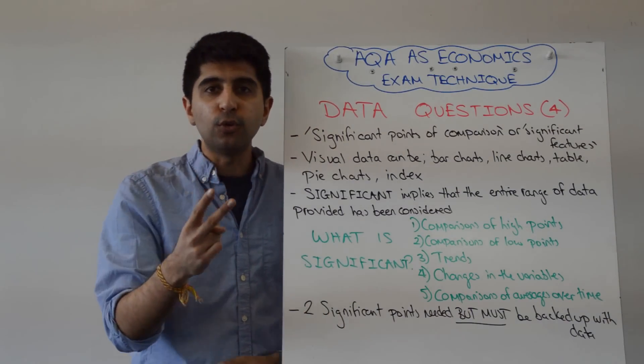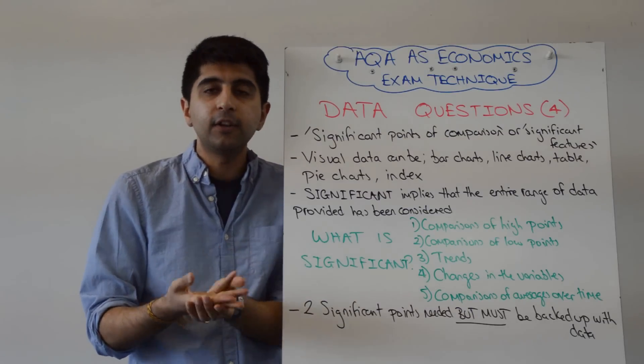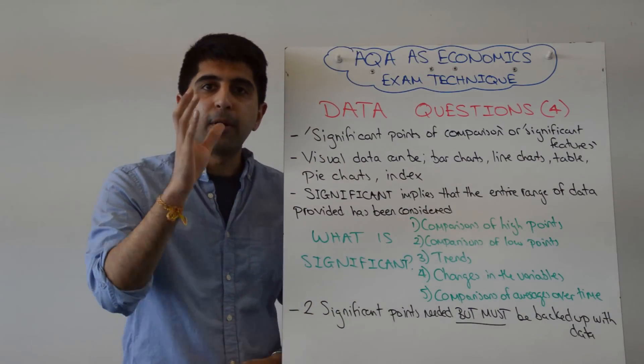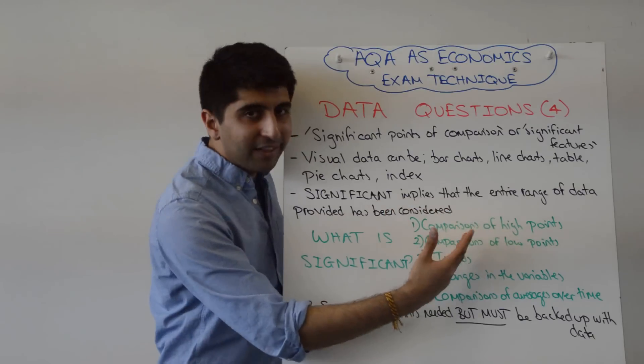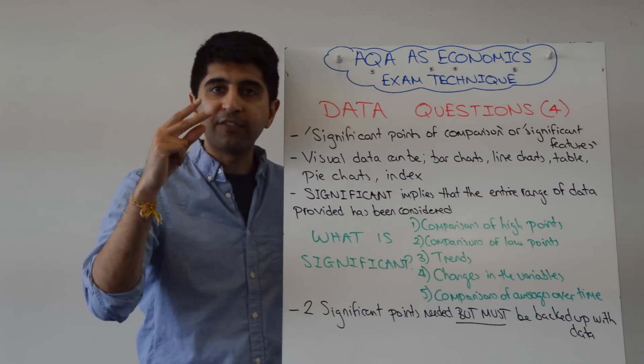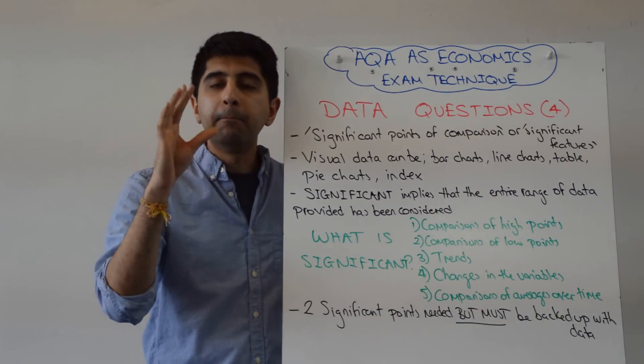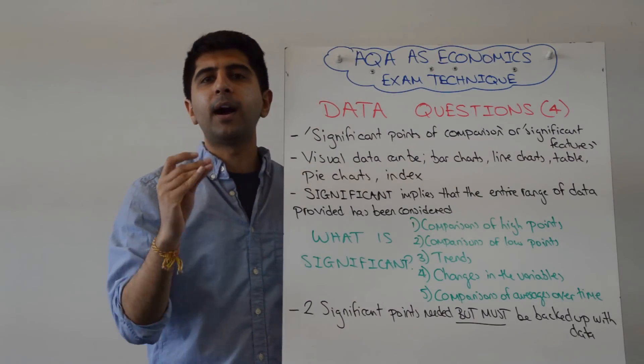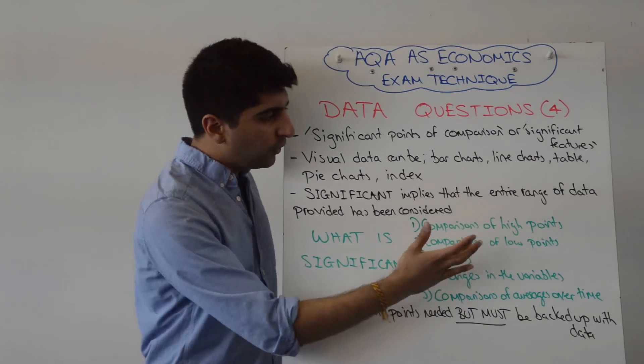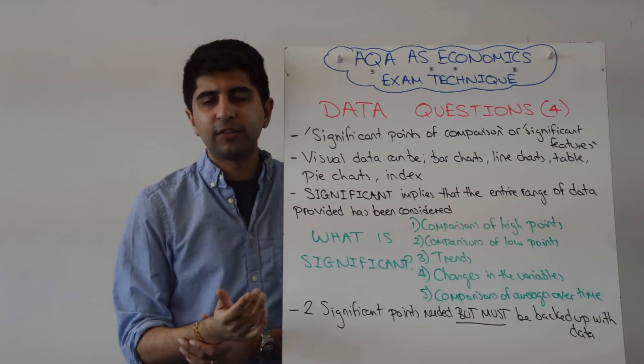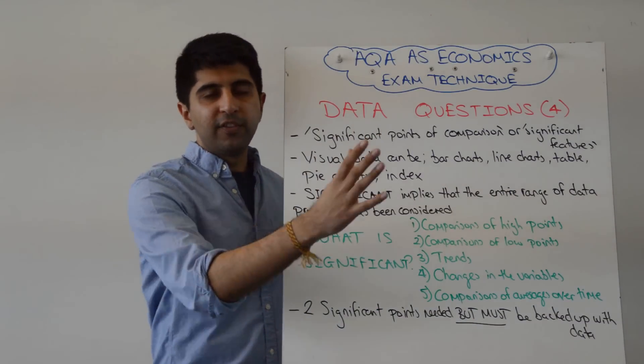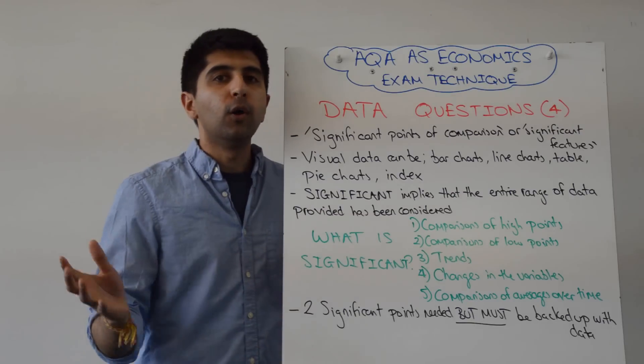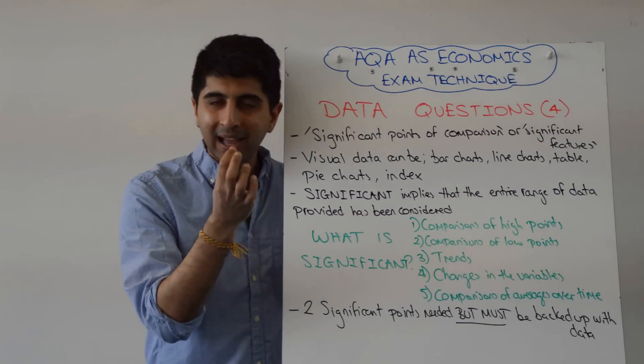But the key thing is once you've done that, you need to make two significant points of comparison or two significant features depending on how the question is worded. But remember, just writing things down will only get you the first mark. The second mark for each point you make must be backed with data. So data is where that second mark comes from. Don't just say in 2012 or whatever, the high point for this variable was this, whereas in 2011 the other variable reached a high point, full stop. No, what were those high points? Make that clear.